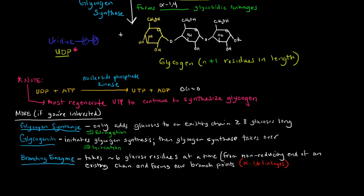In addition, in the last video we talked about how there were branches on glycogen. So there's this enzyme called the branching enzyme. And what it does is it takes about six residues, six glucose residues at a time from the non-reducing end of an existing chain. And it takes those six residues and it attaches them at branch points via alpha-1,6 linkages. So that's a sort of summary of what goes on with glycogen synthesis.